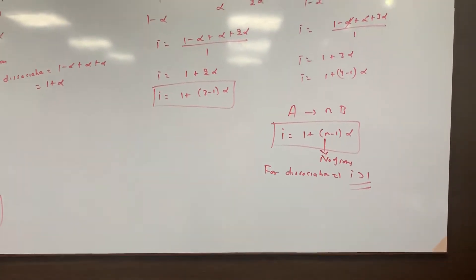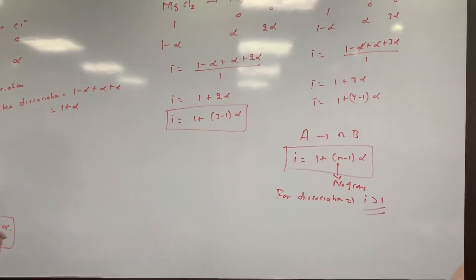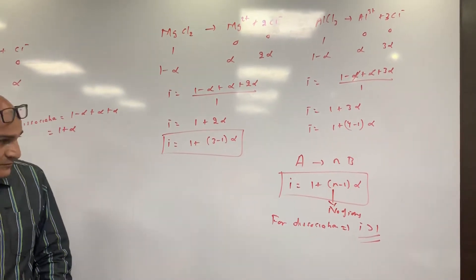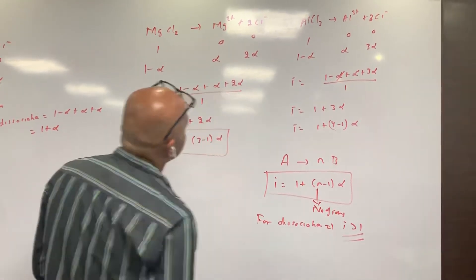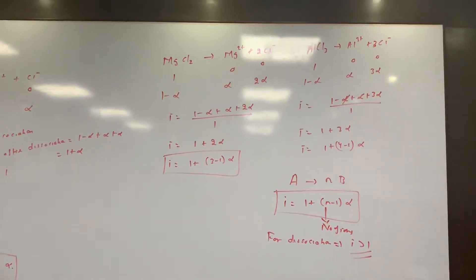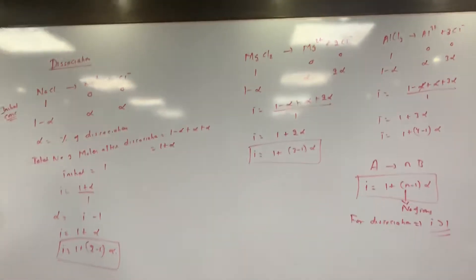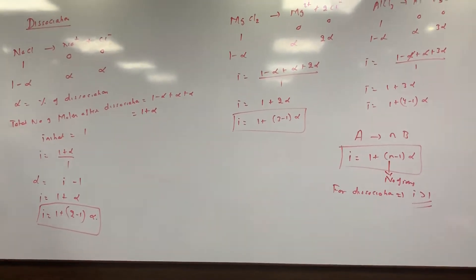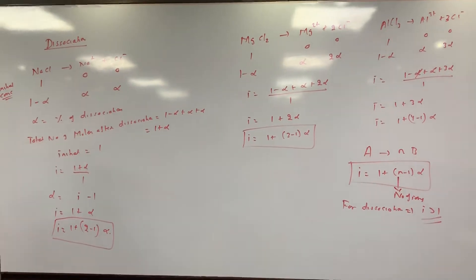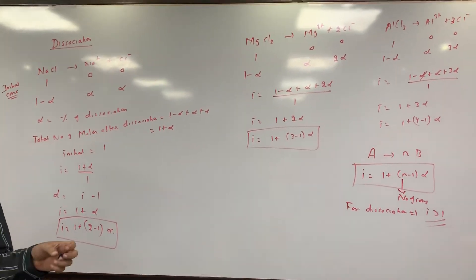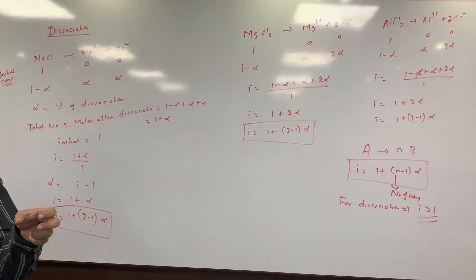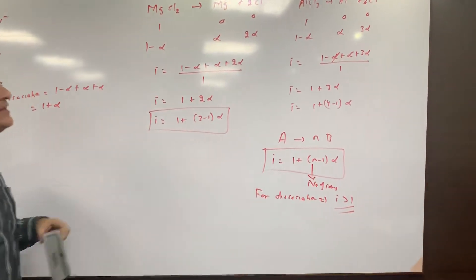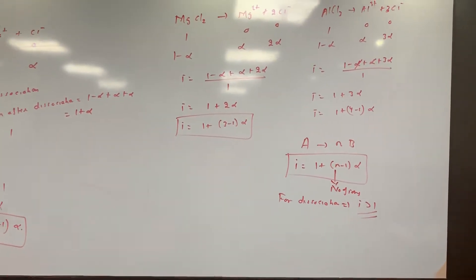Remember, for dissociation i will always be greater than 1. Because of this, your colligative property will increase — for example, if you expected the boiling point to rise by 1 K, it will now be raised by 2 K. So whatever you calculate, your colligative property will increase in the case of dissociation, and i > 1.